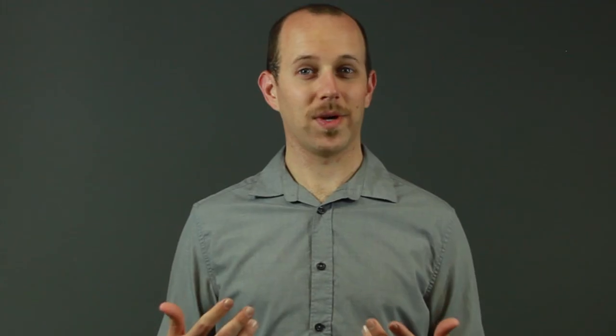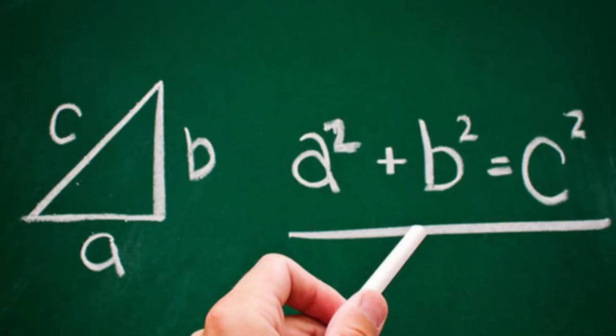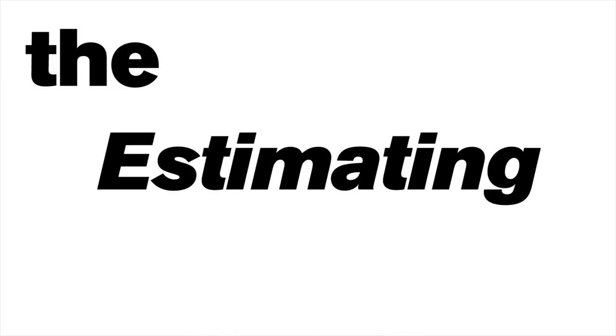Obviously, since I'm explaining this as we go along, it's taking a lot longer than it would if you were just doing it on your own on the test. And of course, you could solve this using the Pythagorean theorem. But if you happen to blank on that, estimating is what will save you. So make sure you pay attention to the diagrams. If you're strapped for time and stuck on a problem, they can provide the key you need to get the right answer and keep moving. Don't underestimate the estimating strategy.